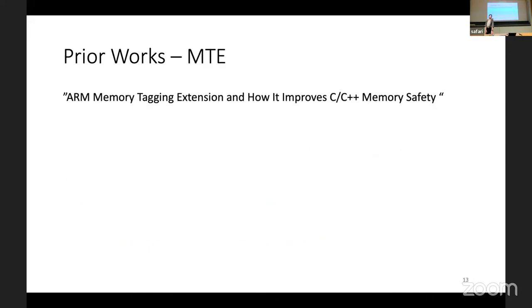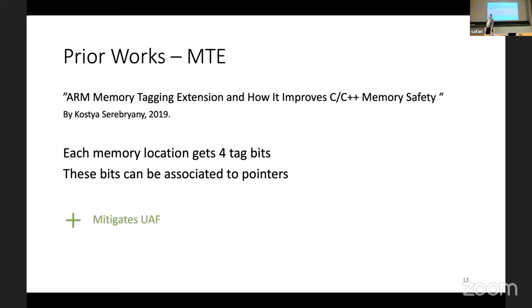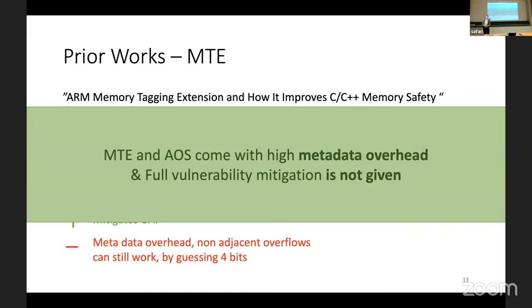The second mechanism is MTE, introduced in 2019. MTE works by tagging memory locations with four tag bits, associating a pointer to those tag bits, and on every memory access checking whether the pointer corresponds to those tag bits. On the positive side, this mitigates use-after-free. However, it also has significant metadata overhead, and furthermore it does not mitigate out-of-bounds access because you basically only need to guess four bits, which is not that hard to do. So both MTE and AOS come with a lot of metadata overhead and don't fully mitigate all vulnerabilities.